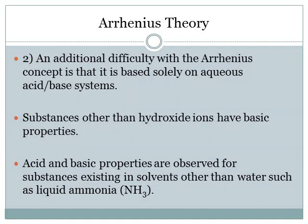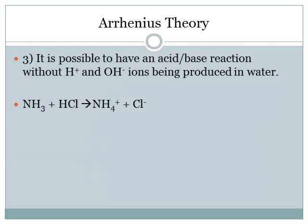Additional difficulties with the Arrhenius concept is that it is based solely on aqueous acid-base systems — so just water-based systems. Acids and basic properties are observed for substances existing in solvents other than water, and an example of this would be NH3, ammonia. It is possible to have an acid-base reaction without hydrogen ions and hydroxide ions being produced in water. To give you an example, I have ammonia, NH3, with hydrochloric acid, HCl, going on to produce ammonium, NH4+, and a chloride ion.